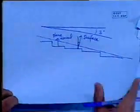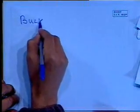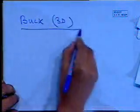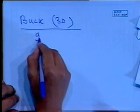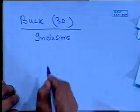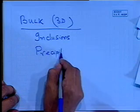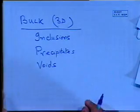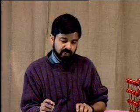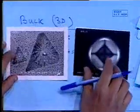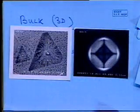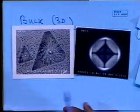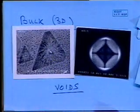That brings us to the last kind of defect: bulk or 3D defects. These include voids, inclusions, and precipitates. Scanning electron micrographs show voids as large holes inside a crystal. We try to avoid these in normal situations because we do not want them in the material. With that, we'll close and take up another topic next time.